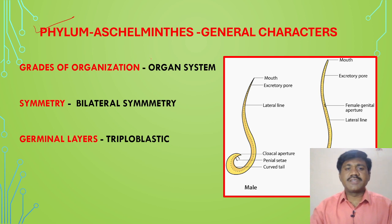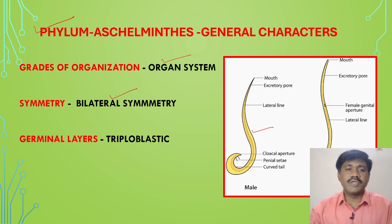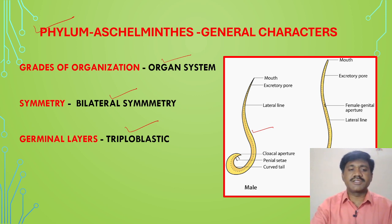What are the general characteristics? Grade of organization: these animals have organ system level organization, meaning in their body we can observe organ systems. Bilateral symmetry is present — we can divide the organism into two equal parts through one plane. Such symmetry is called bilateral symmetry. Regarding germinal layers, they are triploblastic — ectoderm, mesoderm, and endoderm layers are present.